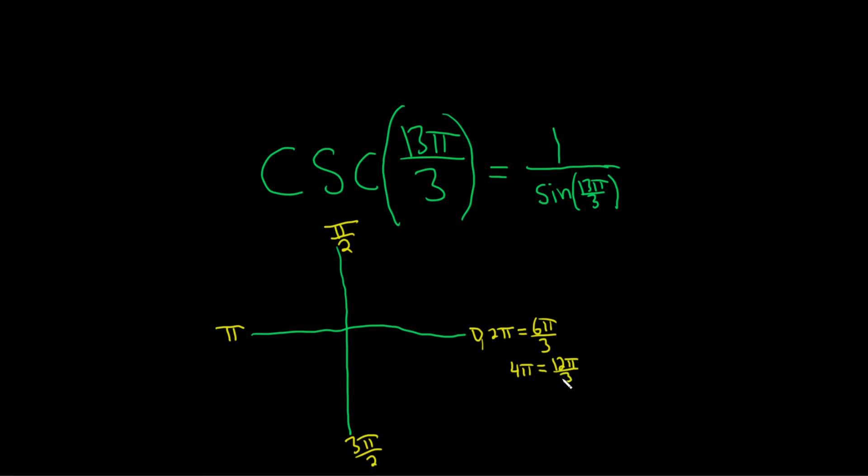Oh, look at that. So if we go around twice, we're almost there. So once, twice. Now we're at 12π over 3. We're trying to get to 13π over 3. So that would be right here. This is the angle 13π over 3.